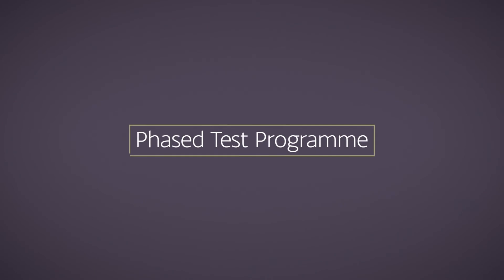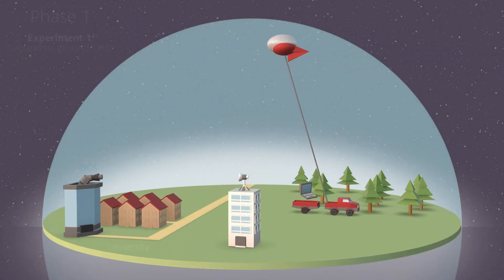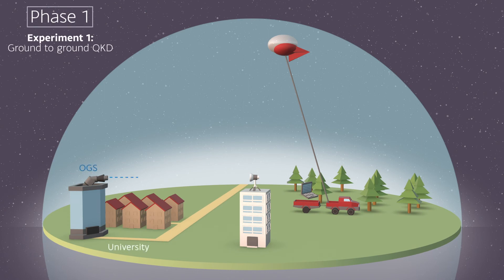Now it's on to the phased test programme. Phase 1 consists of short-range terrestrial and aerial trials. The first experiment will be a ground-to-ground QKD link with a retro reflector mounted on a steerable, stabilized platform.